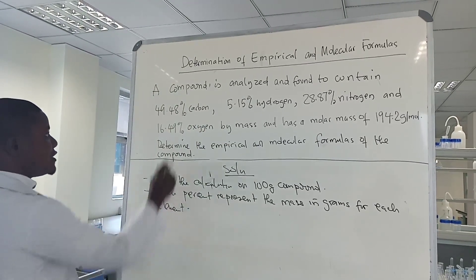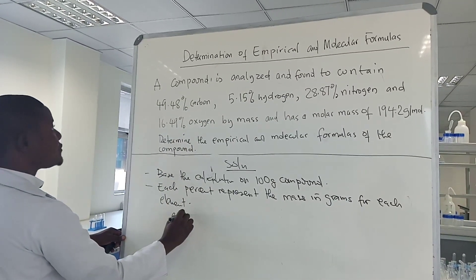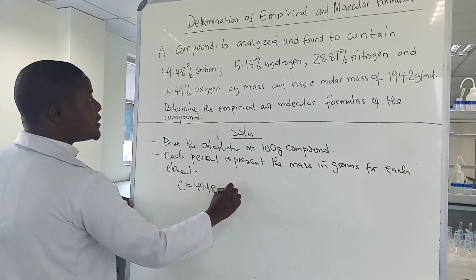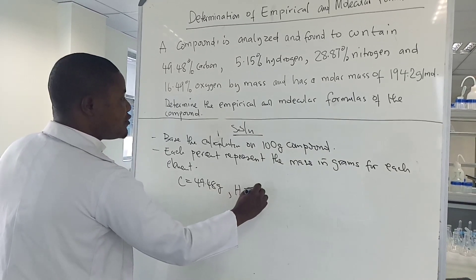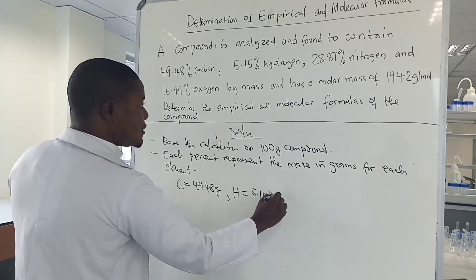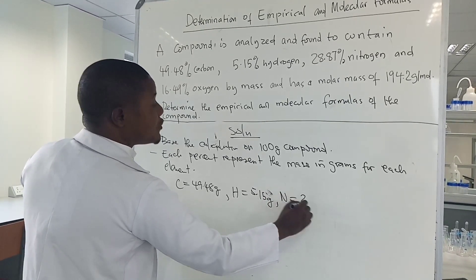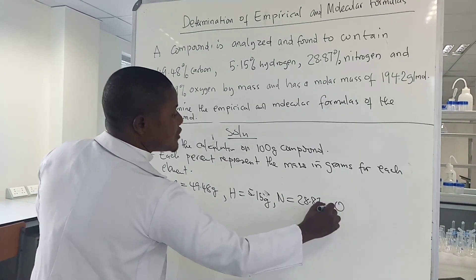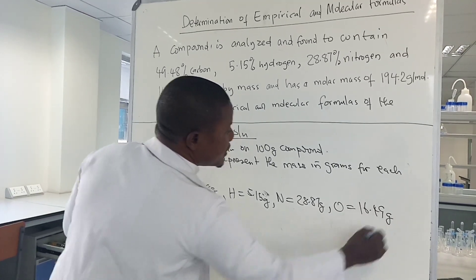So in this case we have: for carbon, 49.48 grams; hydrogen, 5.15 grams; nitrogen, 28.87 grams; and oxygen, 16.49 grams.